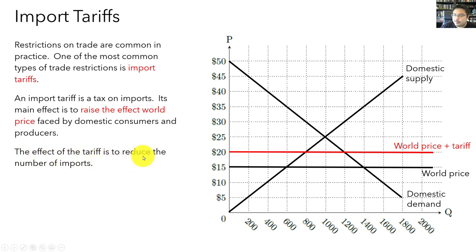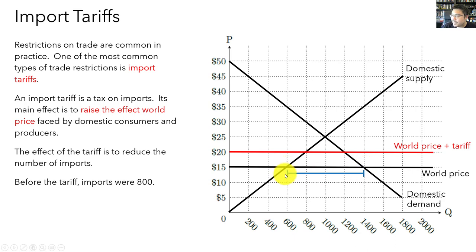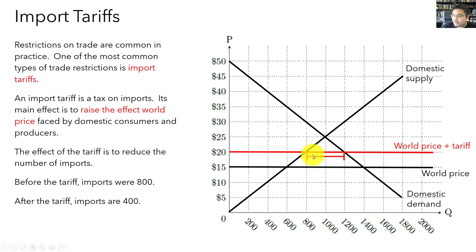The main effect of the tariff is to reduce the number of imports. Before the tariff, imports were 800 — the difference between domestic demand and domestic supply at the world price. After the tariff, imports drop to 400, because at the world price plus the tariff, domestic demand is 1,200 and domestic supply is 800. So imports are only 400. The main effect of the tariff is to reduce the number of imports and raise the effective world price faced by domestic consumers and producers.